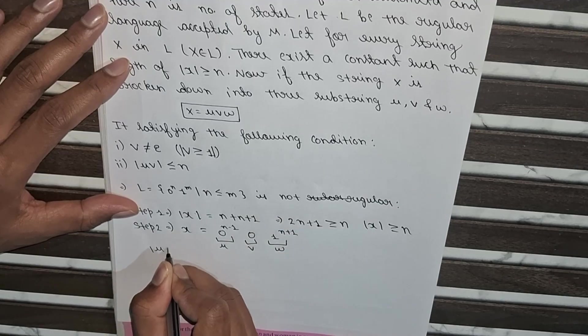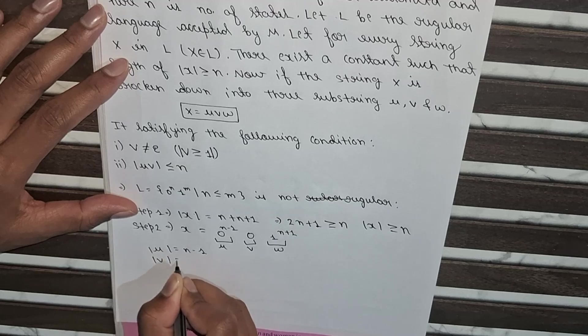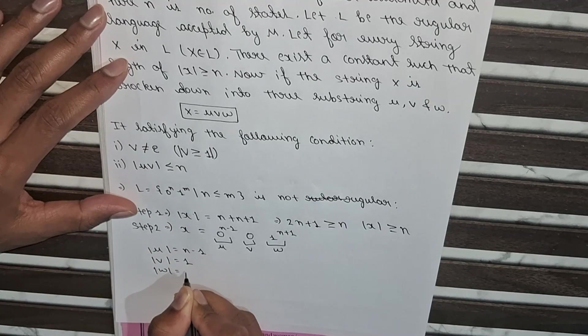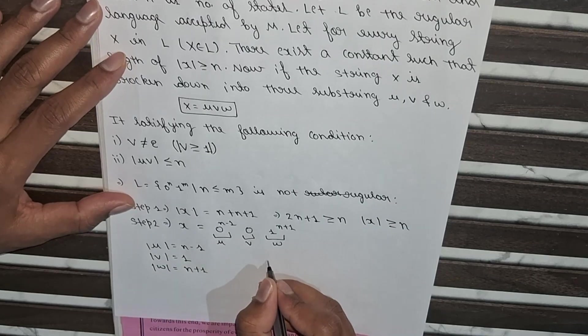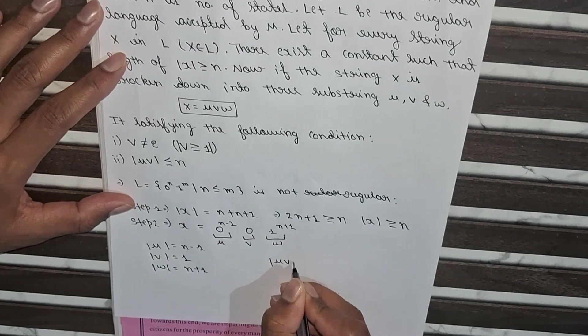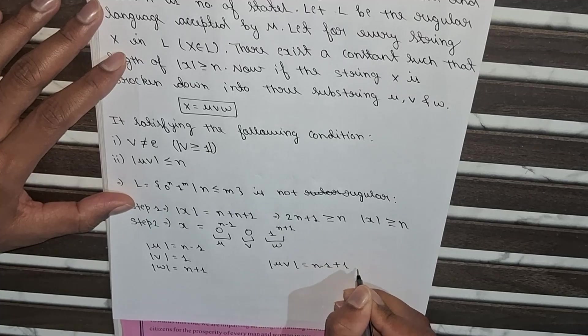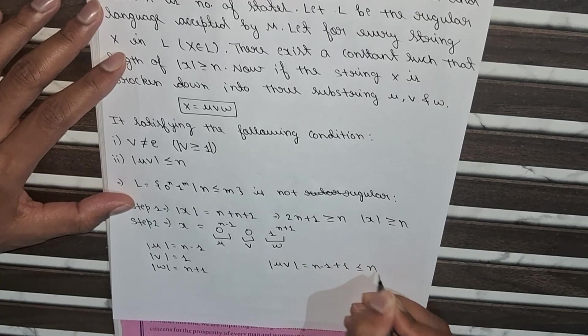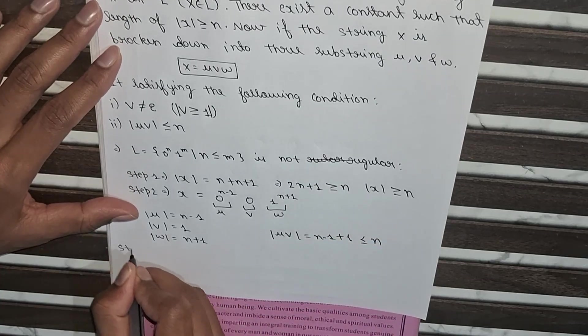So u equals n minus 1, v equals 1, and w equals n plus 1. So here both the conditions satisfy. So n minus 1 plus 1 equals greater than n. So now we will move to step 3.